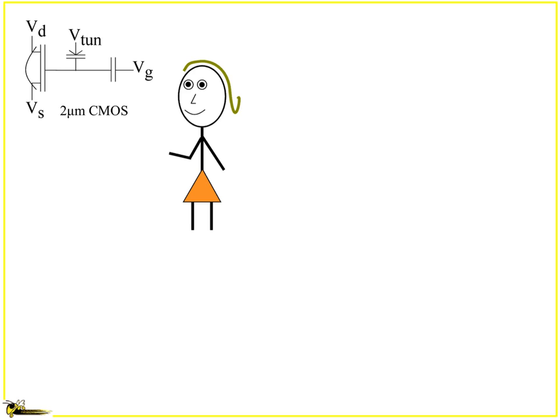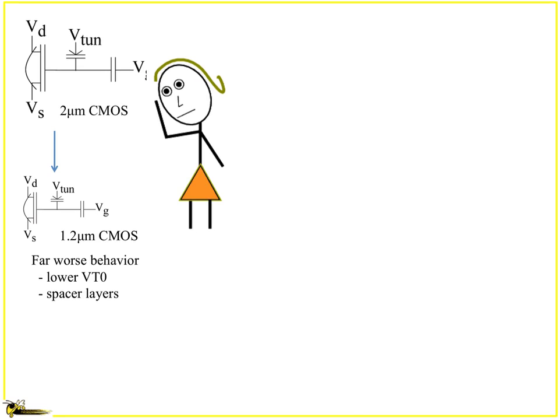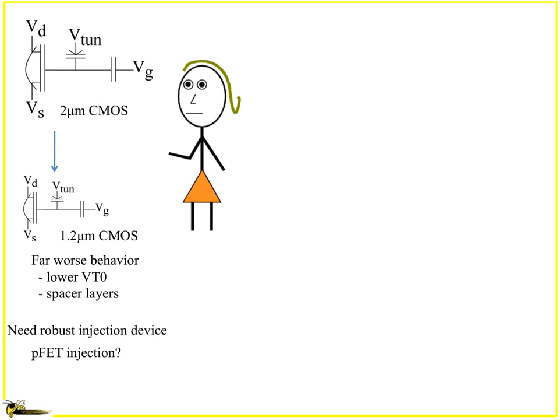We looked at this initial device and thought this is great, everything is in good shape, and let's just make a smaller one because that's a good idea. And then we go nope, it turned out it was much worse behavior because this interesting implant structure didn't behave well when you went lower threshold voltage and the spacer layers to get rid of the high fields, not such a good thing. You're like, oh, I really want a robust injection device.